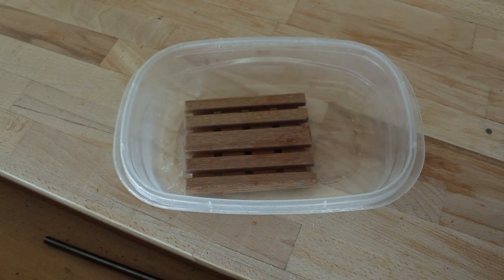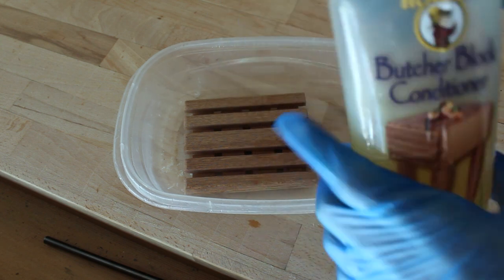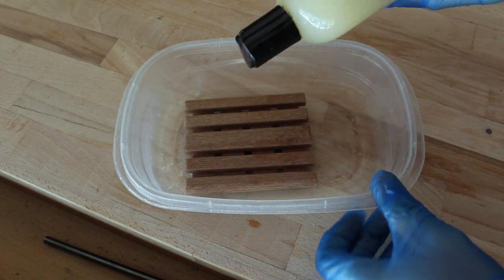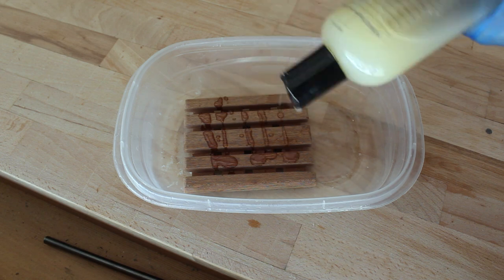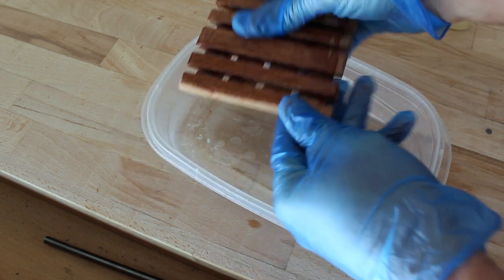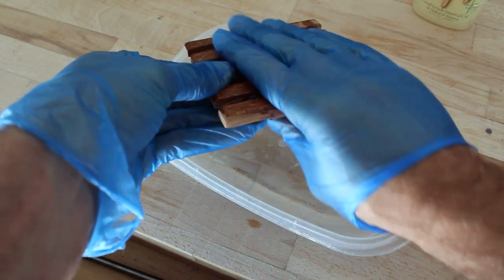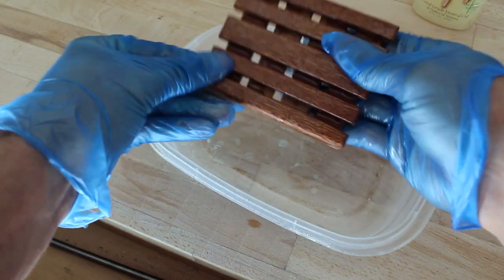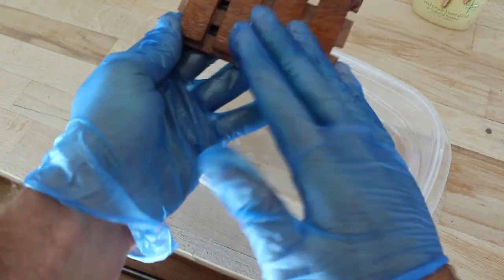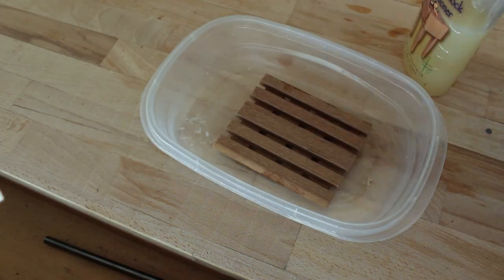With the sanding done it's time to apply the finish. I decided to use Howard's butcher block conditioner which is a food safe product which even though I won't be eating off these soap dishes they'll be in frequent contact with my skin so I figured why not use a more natural finish. If you enjoyed this video please consider liking it and subscribing to the channel and if you'd like to get notified when I upload new content hit that notification bell. As always thanks for watching.